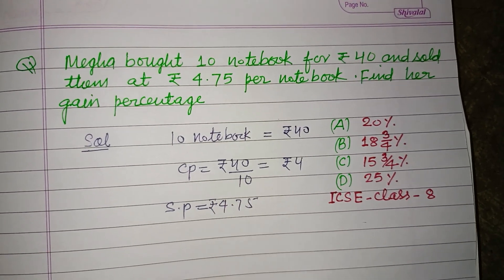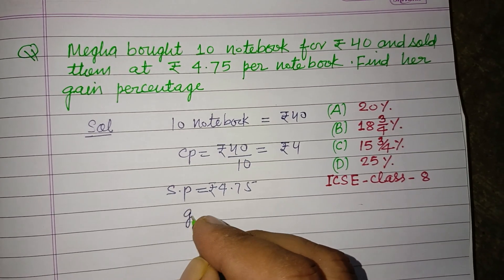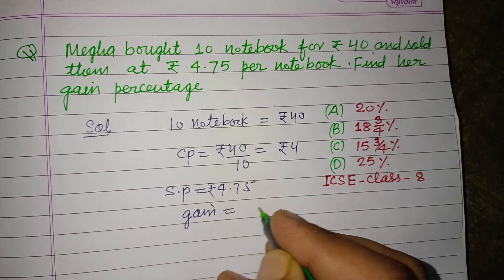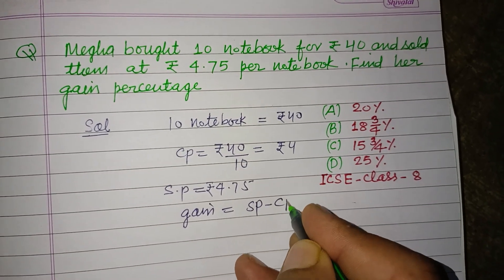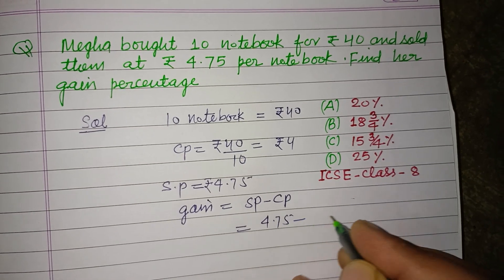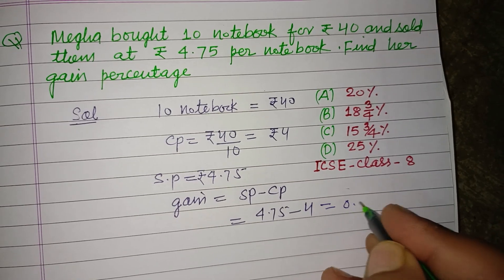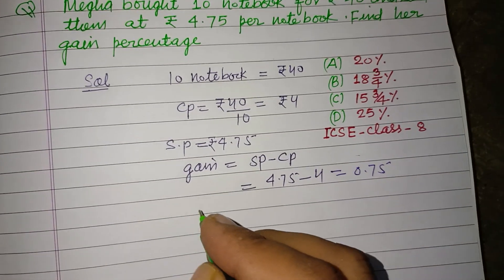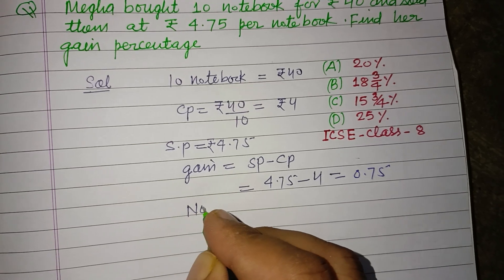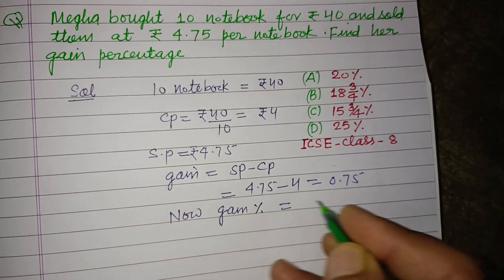So the gain equals SP minus CP. SP is 4.75 minus 4, that is 0.75.